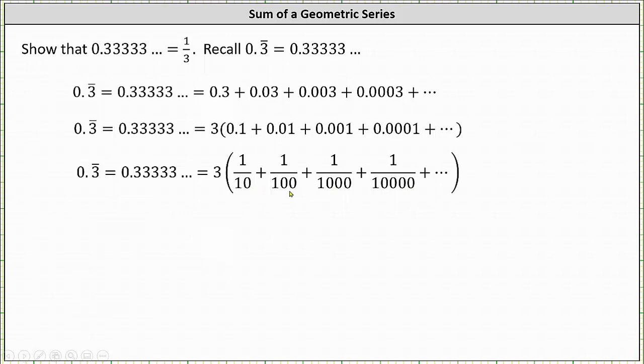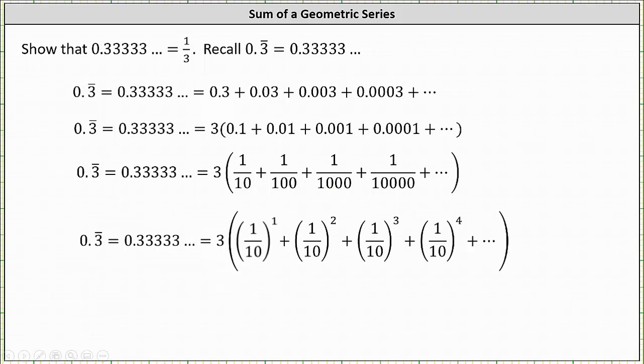We'll write the fractions as powers of 1 tenth. 1 tenth is equal to 1 tenth. 1 hundredth is the square of 1 tenth. 1 thousandth is the cube of 1 tenth. And 1 ten-thousandth is equal to the fourth power of 1 tenth.